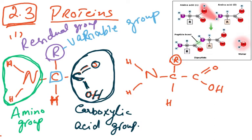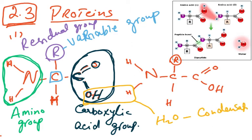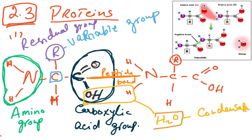I've drawn two amino acids. What is going to happen is that water is going to be removed — when water is removed, this is called condensation. A bond forms between the C and the N, and this is called the peptide bond.